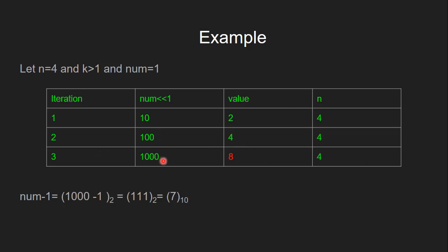In the third iteration, after shifting num by one position, the value becomes 8, which is not smaller than or equal to 4. So the condition is false and we exit out of the loop. Then we subtract 1 from 8 and we get this binary number which has all of its bits set and the maximum possible value, which is equivalent to 7.